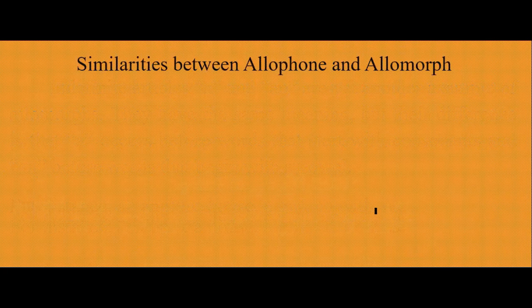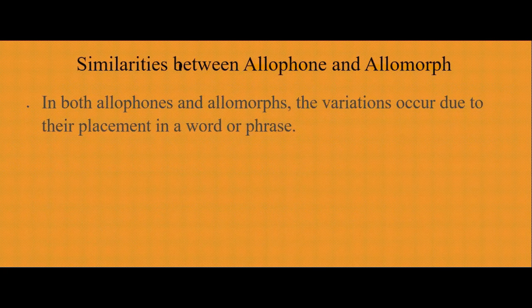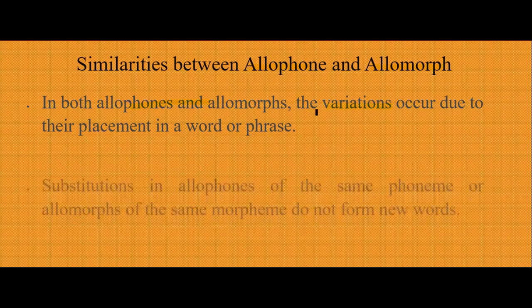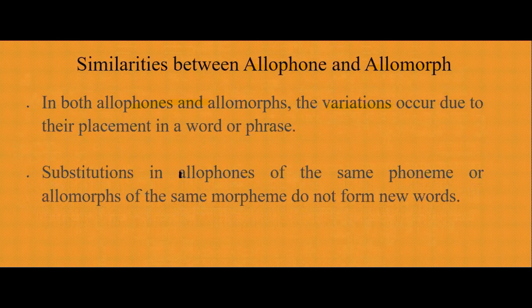Now let's look at similarities. In both allophones and allomorphs, variation occurs due to the placement of the sound or morpheme in a word or phrase. Substitution of allophones of the same phoneme, or allomorphs of the same morpheme, does not form new words.